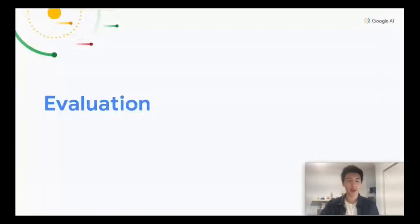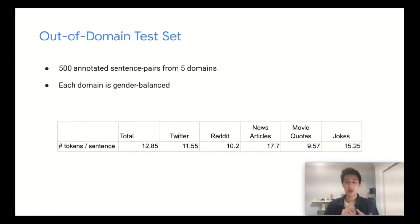For evaluation, for both the algorithm and the model, we have an out-of-domain test set of 500 annotated sentence pairs from five domains: Twitter, Reddit, news articles, movie quotes, and jokes. We also ensure that each domain is gender-balanced so that a rewriter can't have impressive performance by performing well on one gender and not the other.